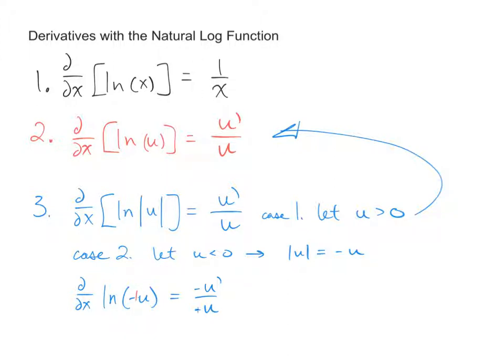And it turns out a negative divided by a negative is a positive. So it doesn't matter if u is positive or u is negative, you still end up with u prime over u.